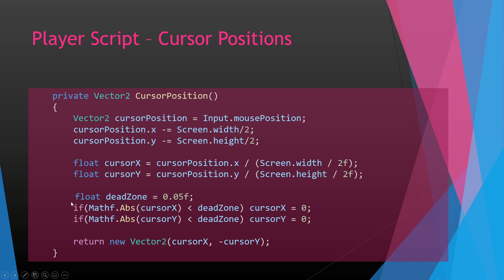The last piece is a dead zone set to 0.5f. This isn't honestly ideal because it sets the dead zone to zero on X or Y if you're within a range, creating like a crosshair dead zone. I need to readjust this to be more of a normalized vector — just throwing quick code together and playing around with it. We then return new Vector2(cursorX, -cursorY). The negation is just an adjustment for the way I programmed everything else.